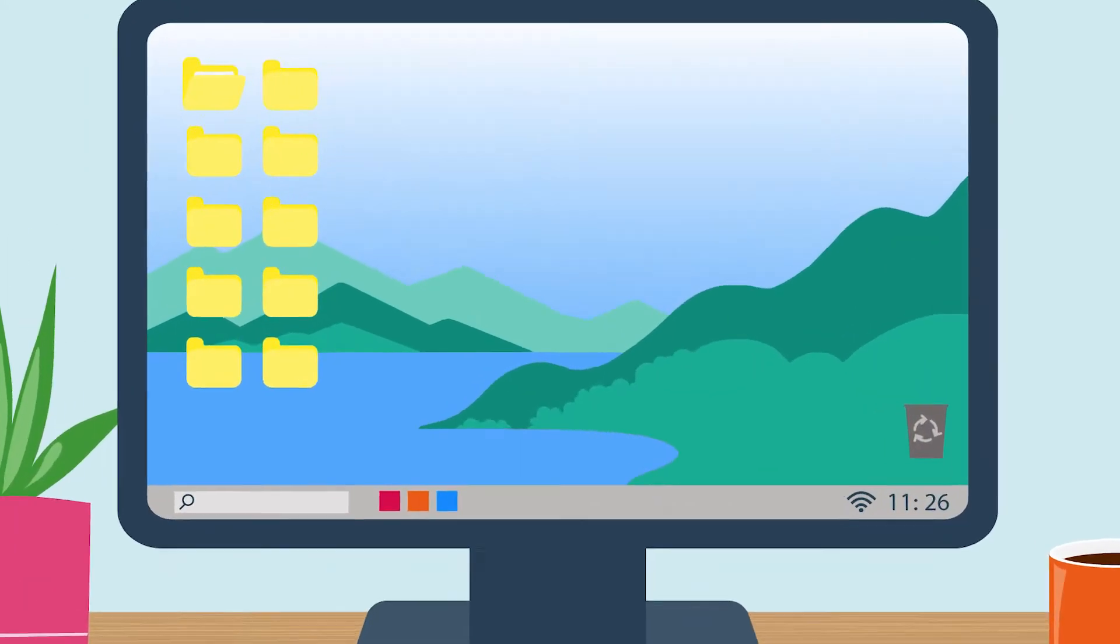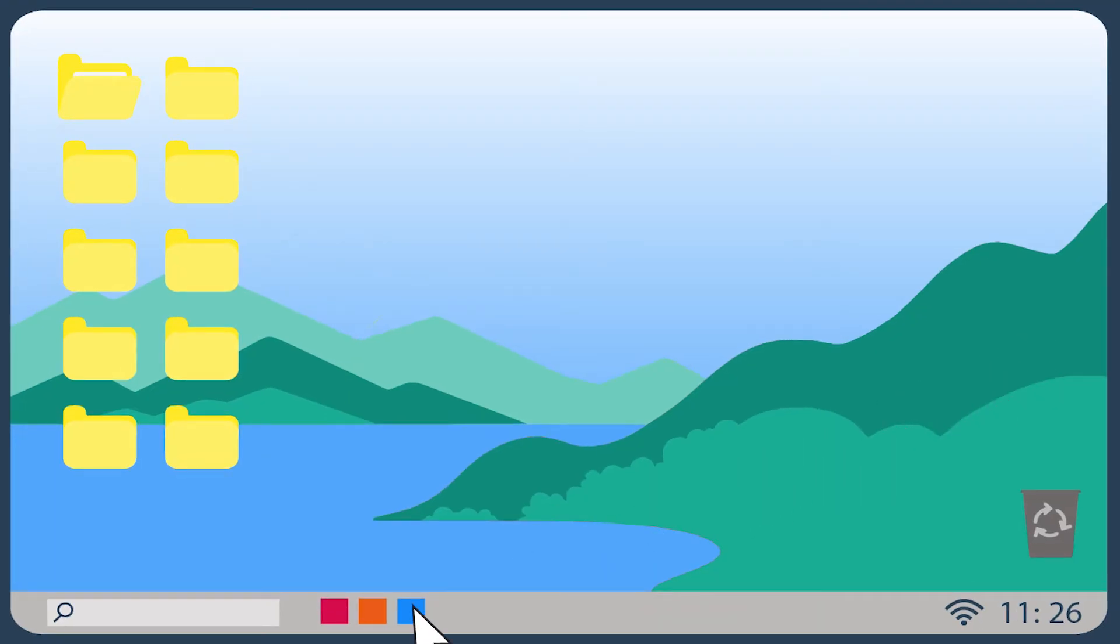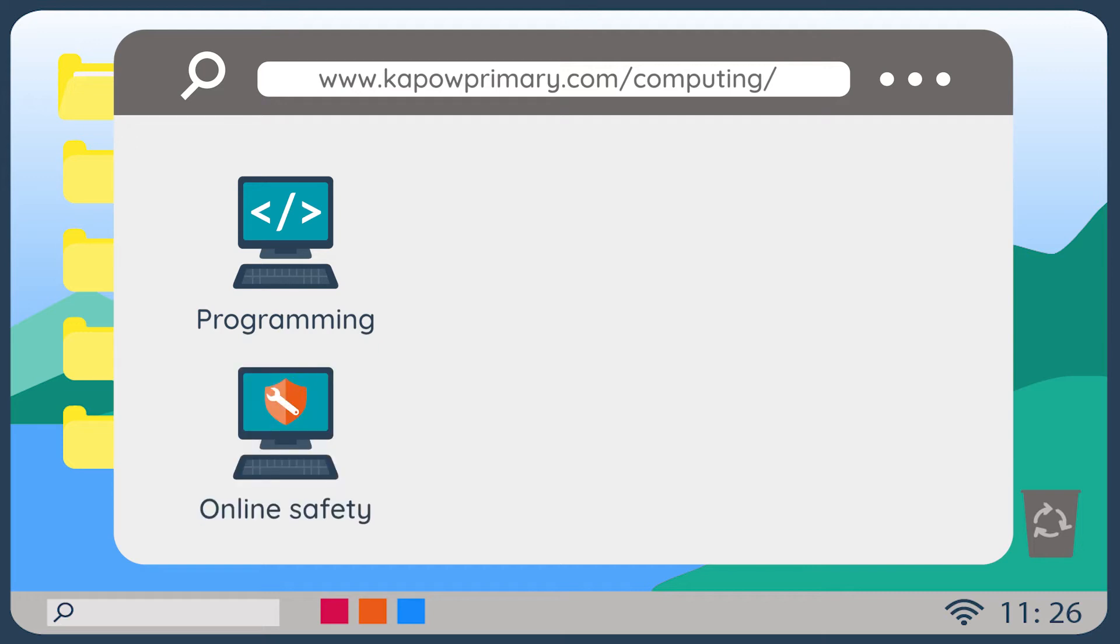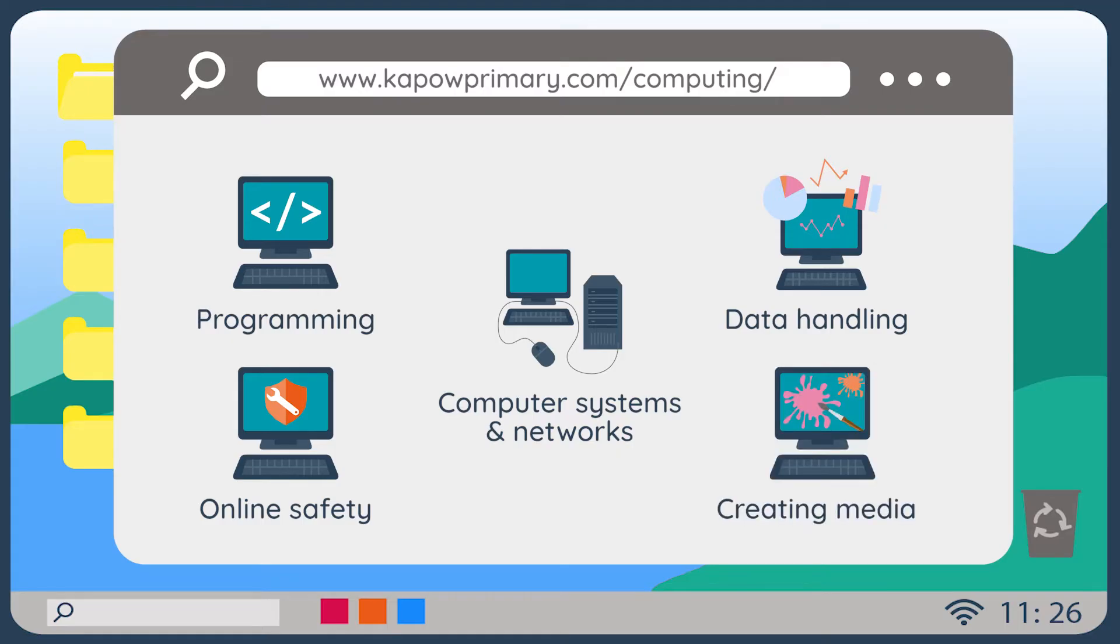The scheme ensures full coverage of the national curriculum and is organised into five strands: Programming, online safety, computer systems and networks, data handling, and creating media.